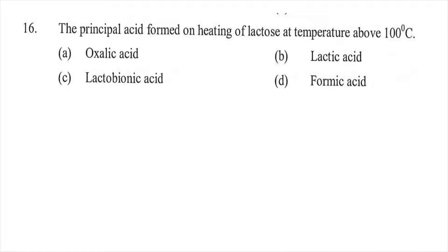Question sixteen: The principal acid formed on heating of lactose at a temperature above 100 degrees Celsius — option A oxalic acid, option B lactic acid, option C lactobionic acid, or option D formic acid. The right answer is D, formic acid.